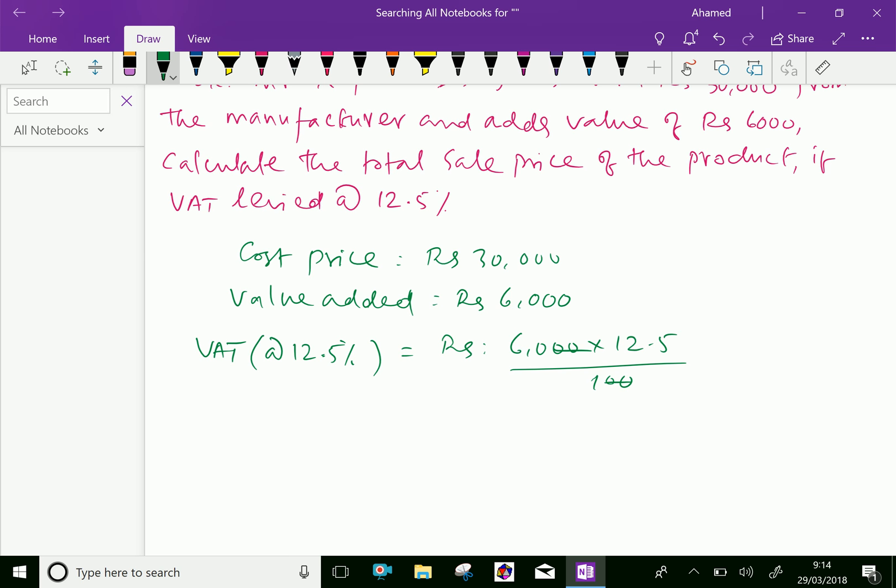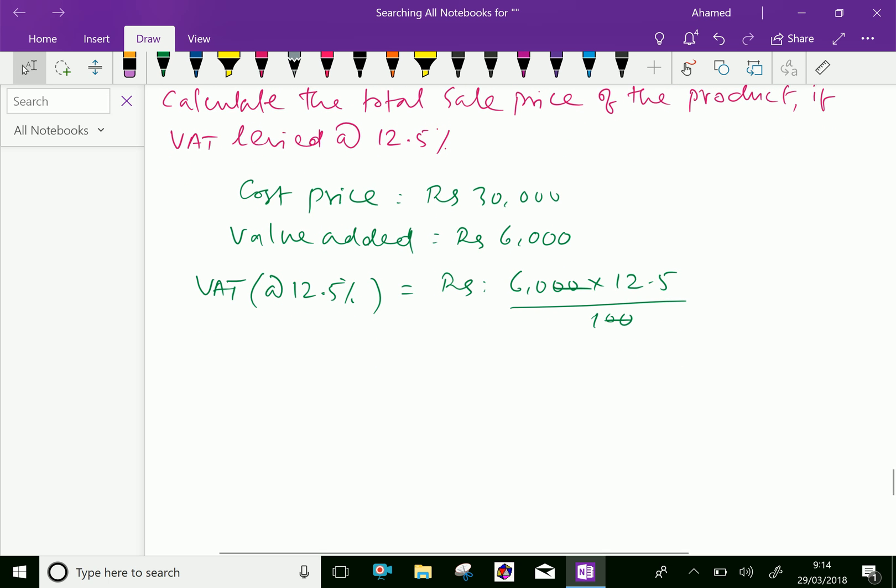And we will get the value, 60 multiplied by 12.5 equals Rs. 750.